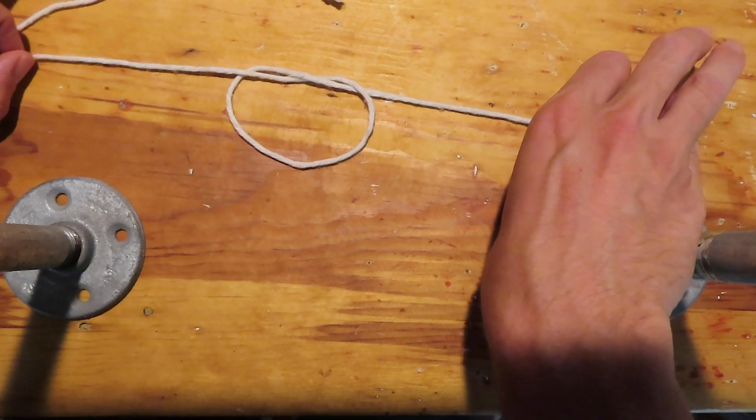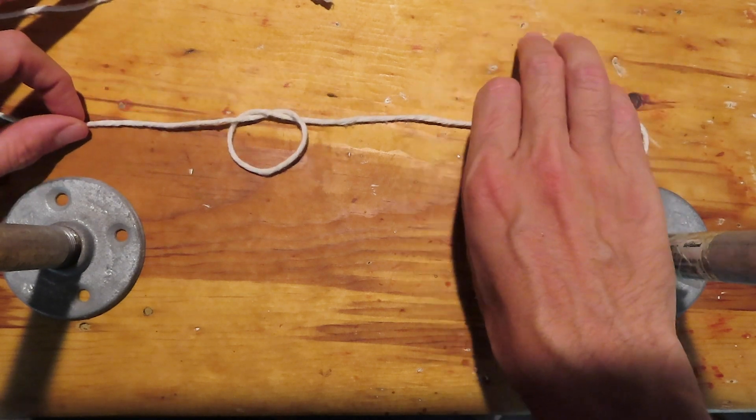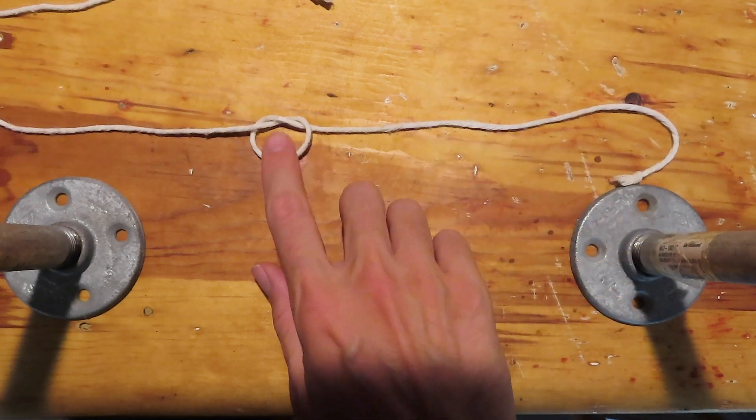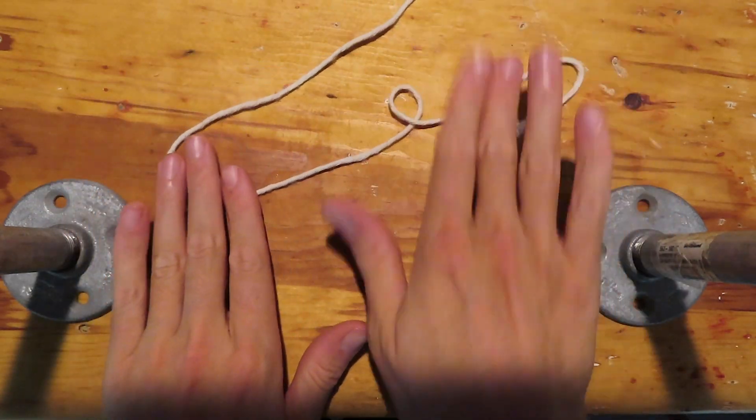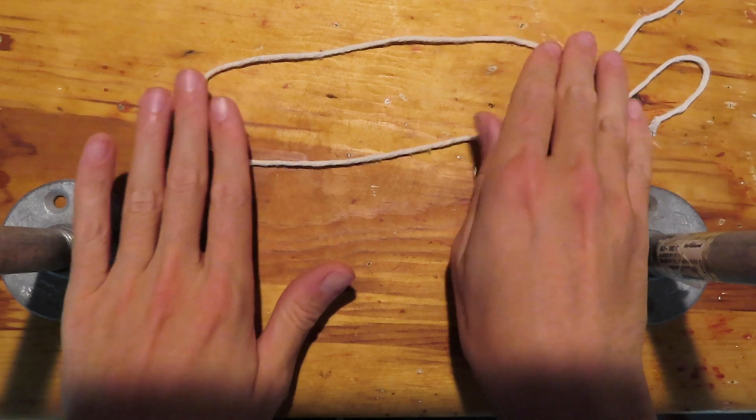Tying the figure eight is very similar to an overhand knot. In fact, if you screw it up, you probably will end up with one. So let's take out a bite of rope, a kind of loop like this, as if we were going to tie the overhand.